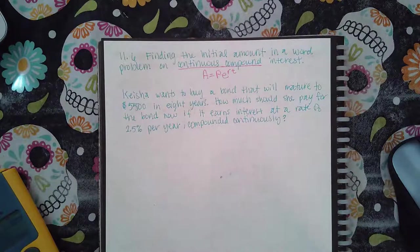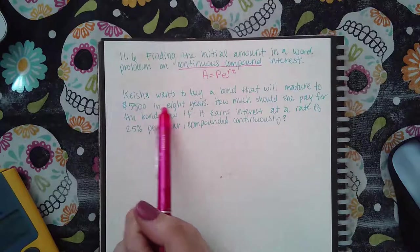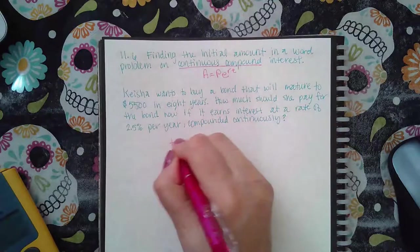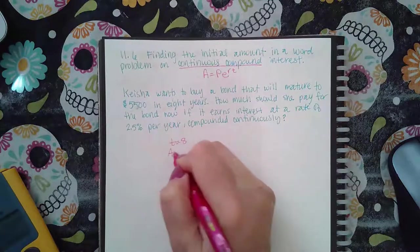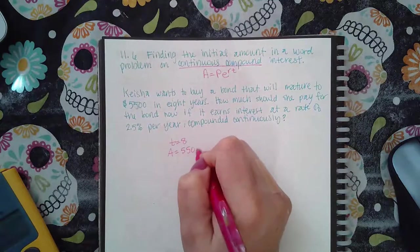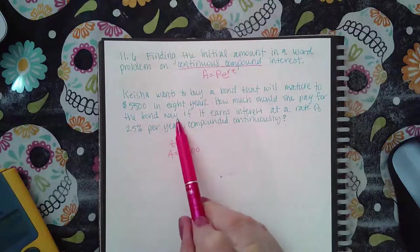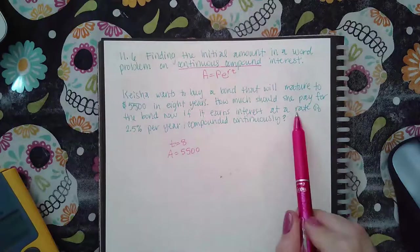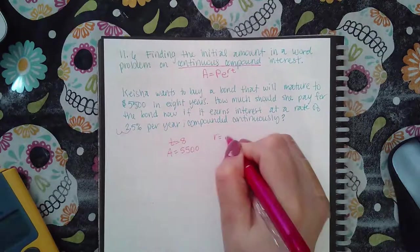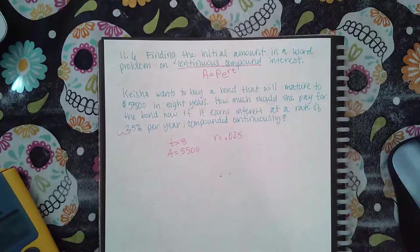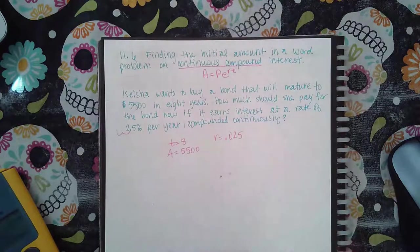So it says, Keisha wants to buy a bond that will mature to $5,500 in eight years. So that means time is eight years. She wants this amount in eight years. So that has to be the A because that's the amount afterward. It says, how much should she pay for the bond now if it earns interest at a rate of 0.025 compounded continuously? So they want to know the value right now, which means they want to know P.